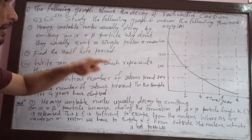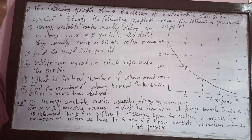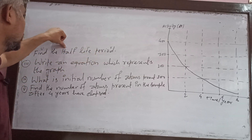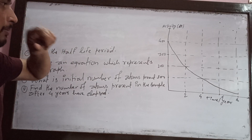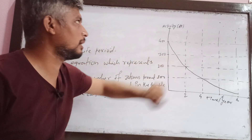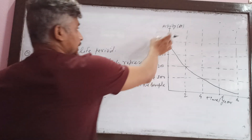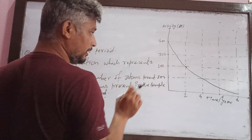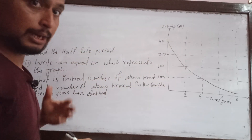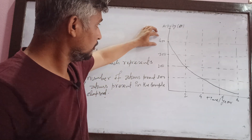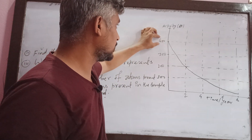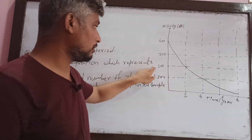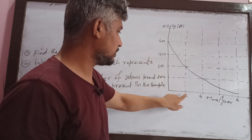Now, question two. We will find the half-life period. The half-life period is found from this graph for cesium. This is activity on the y-axis and time in years on the x-axis. The half-life is the time at which the activity halves. At time zero, the activity is 400 Becquerel.